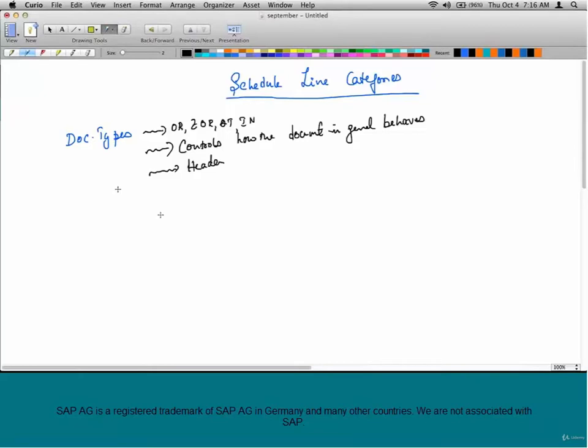Now what controls the line item? Item category. Example: TAN, TAP, TAD. One is for the standard item category, one is for bill of materials, one is for surveys and so on. So they control how the line item behaves.